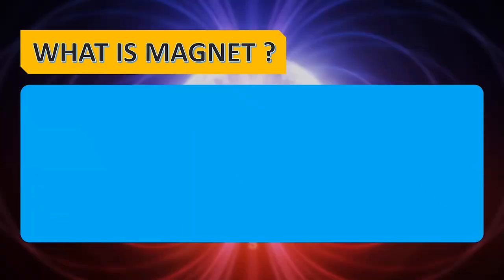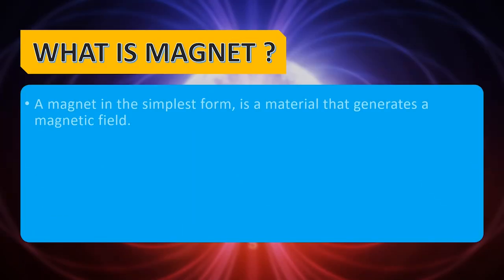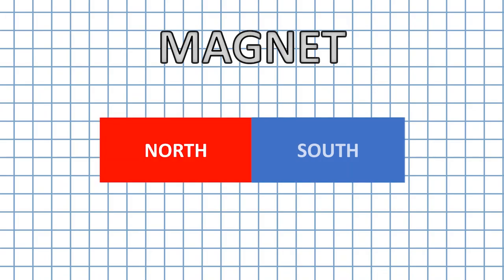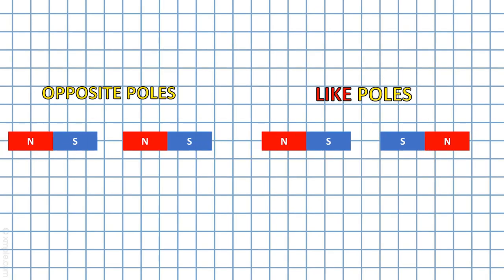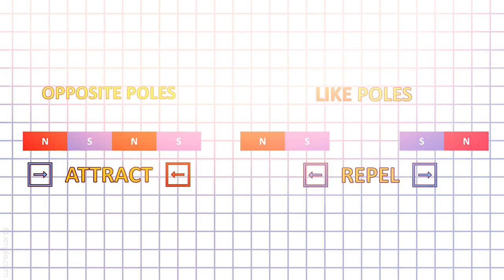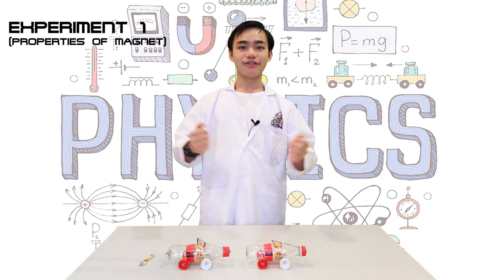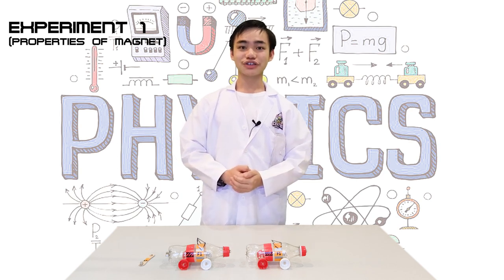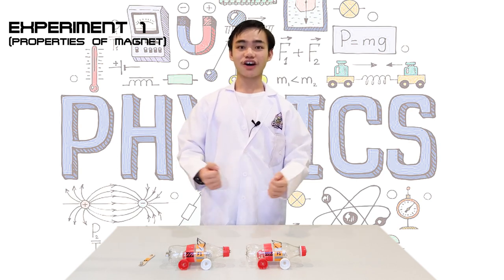A magnet in the simplest form is a material that generates a magnetic field. Magnetic field sources are dipolar, having a north and south magnetic pole. Opposite poles attract and like poles repel. Now I will conduct an experiment to show the properties of a magnet.